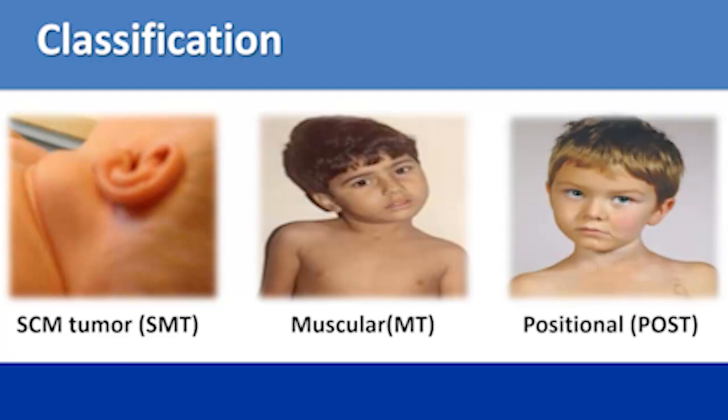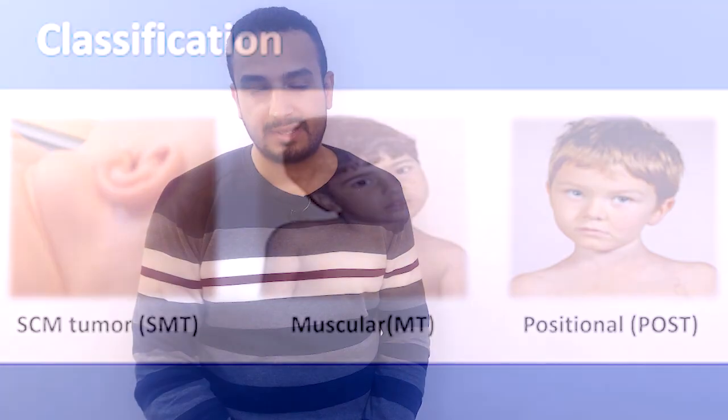The last classification is where there is no mass. When you apply a flexibility test for the sternocleidomastoid muscle, you won't find shortening, but the child takes a behavior of tilting his head to one side. This is a positional behavior, and this classification is called positional torticollis.